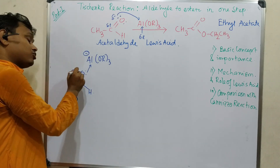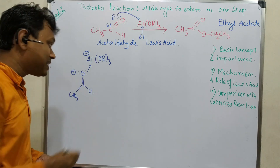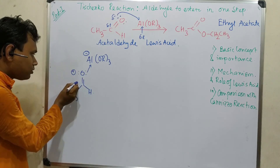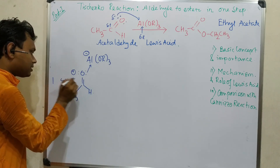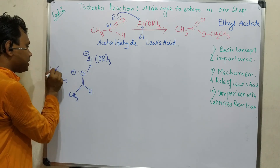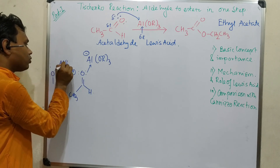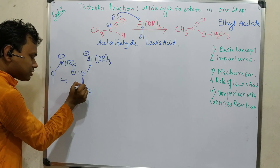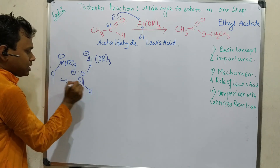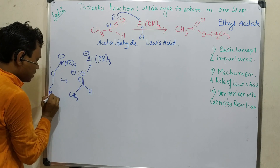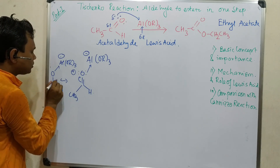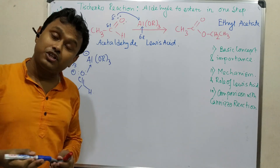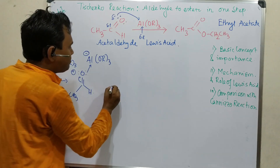Oxygen is electronegative yet carries a positive charge in that form, making it unstable. Drawing the canonical form, oxygen becomes neutral and aluminum carries a negative charge. You can think of the carbon as being effectively positive — so after this coordination, the electrophilicity of the carbonyl carbon is greatly enhanced.